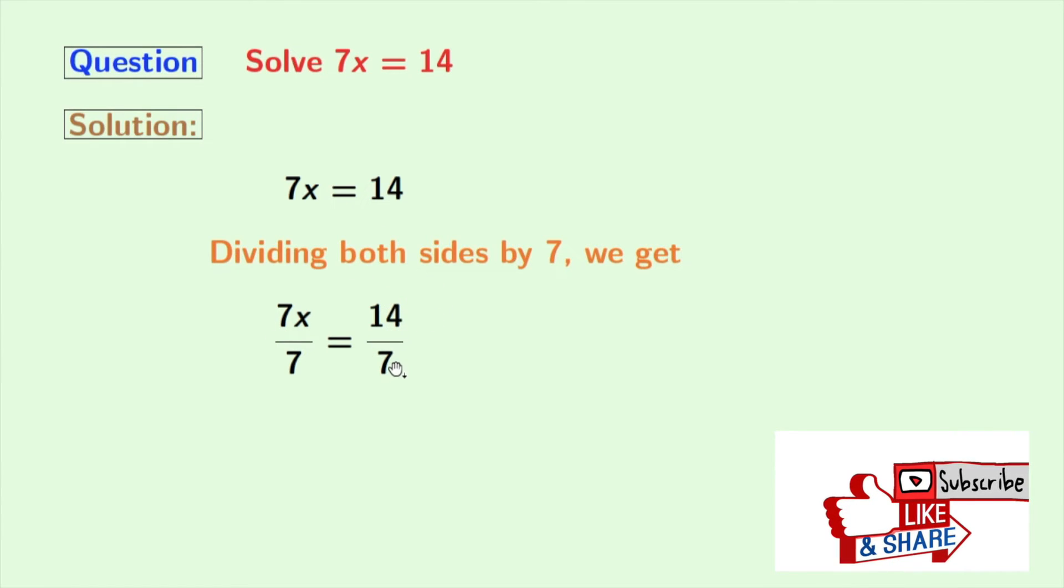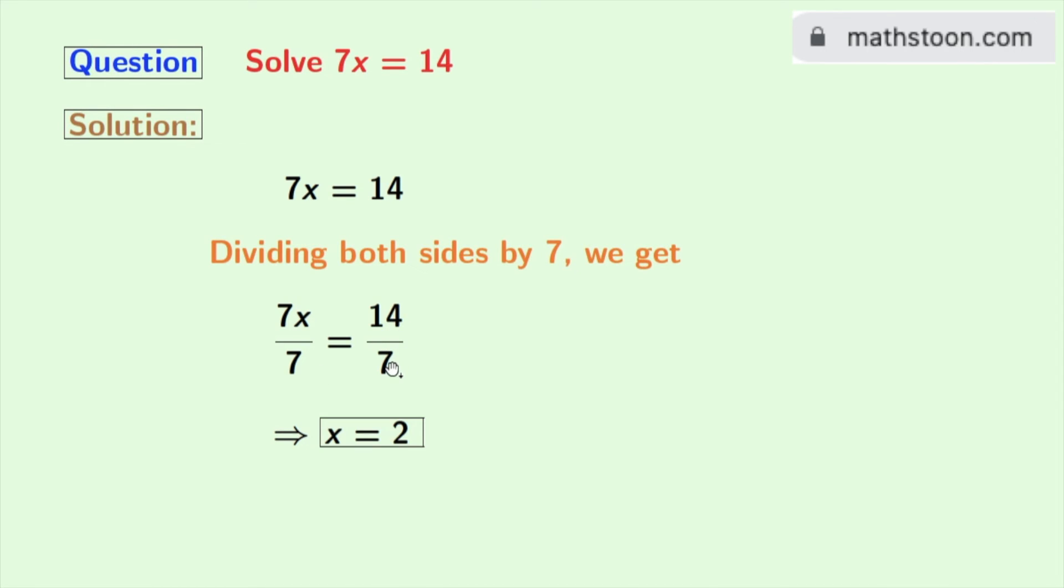On the left-hand side, 7 gets cancelled and we are left with x. And on the right-hand side, 14 divided by 7 is 2, so we get 2. Finally, we get x equals 2 as our answer.